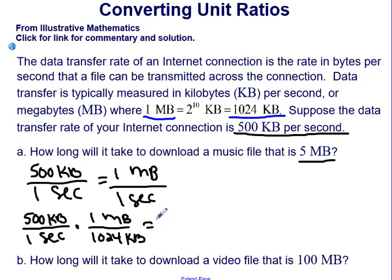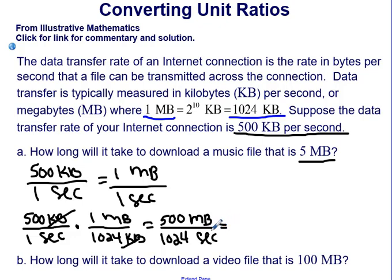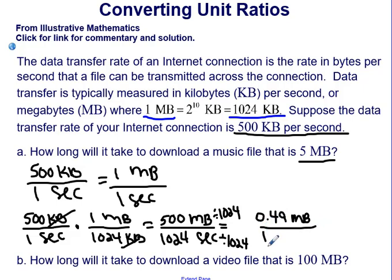The kilobytes cancel out, leaving us with 500 over 1,024 seconds. We don't want per 1,024 seconds — we want megabytes per second — so we divide numerator and denominator by 1,024 to get the unit rate. That equals approximately 0.49 megabytes per one second, using our conversion factor of one megabyte to 1,024 kilobytes.